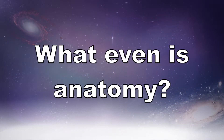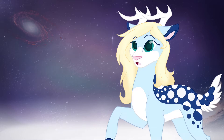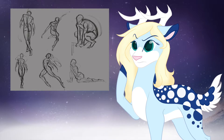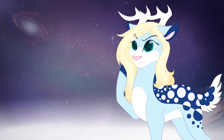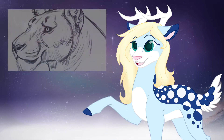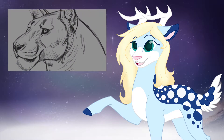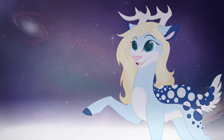So the first question is, what even is anatomy? Anatomy is basically the general shape as well as the placement of any limbs, organs, bone structure, etc. You'll generally hear anatomy being referred to when people are talking about drawing humans. However, anatomy can be used to refer to anything that might have a specific shape or structure.